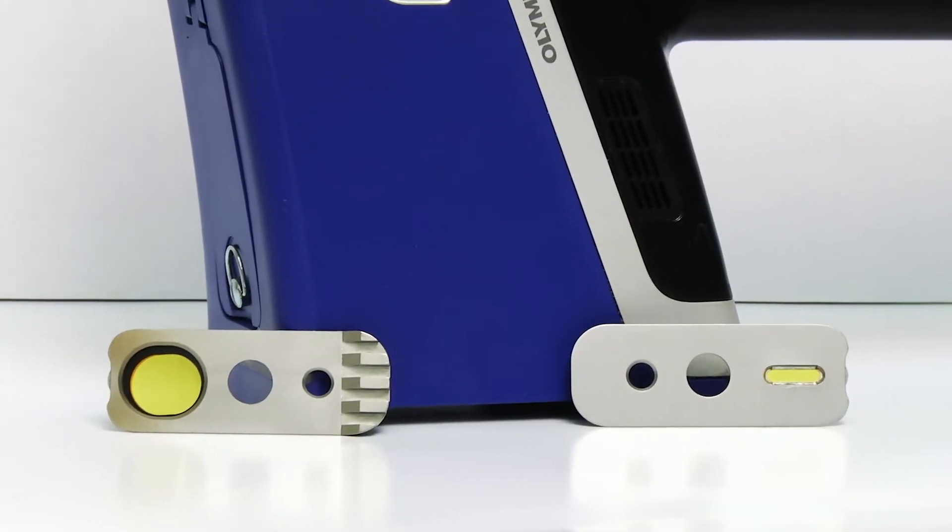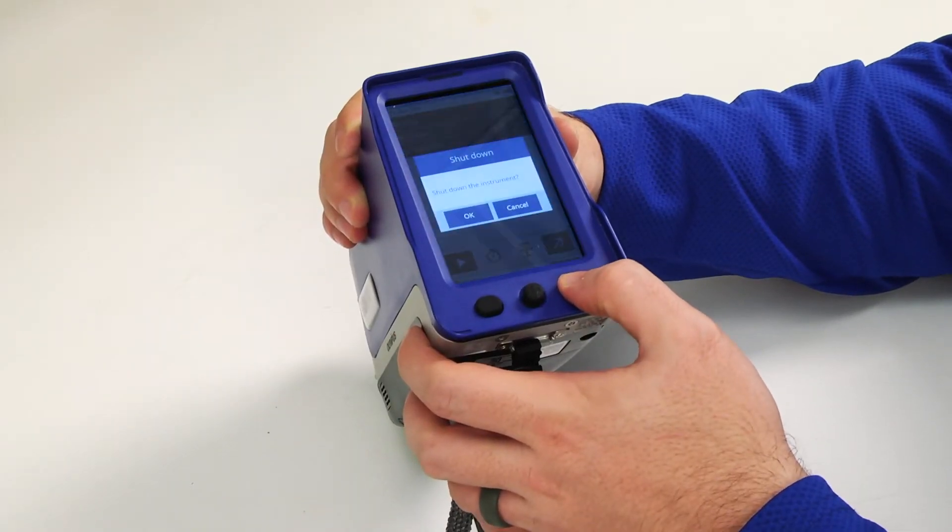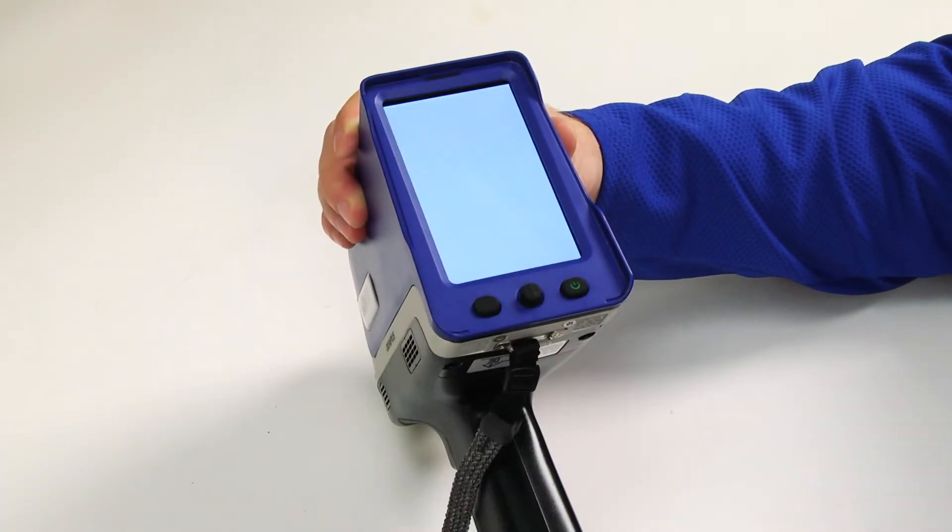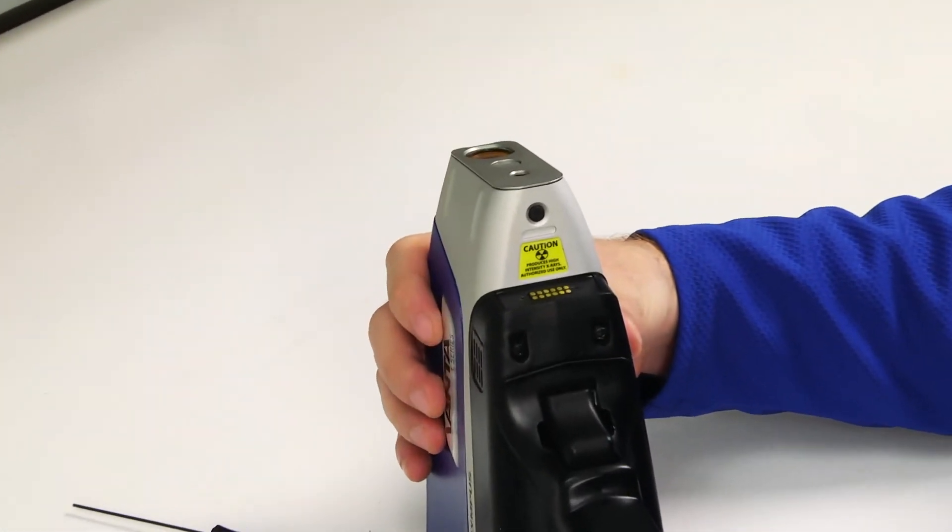I'm only going to demonstrate using the hot heel, but the process is the same for the weld mask. Start by making sure that your Vanta is powered down and remove the Vanta faceplate by pressing the large round button on the underside of the probe head.